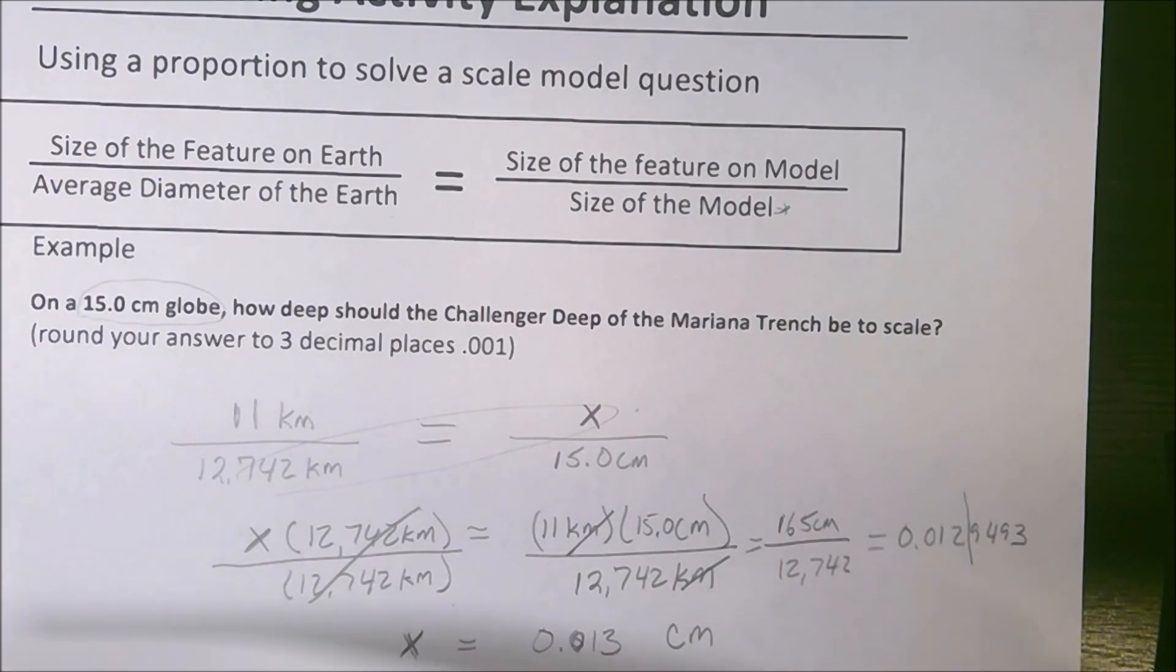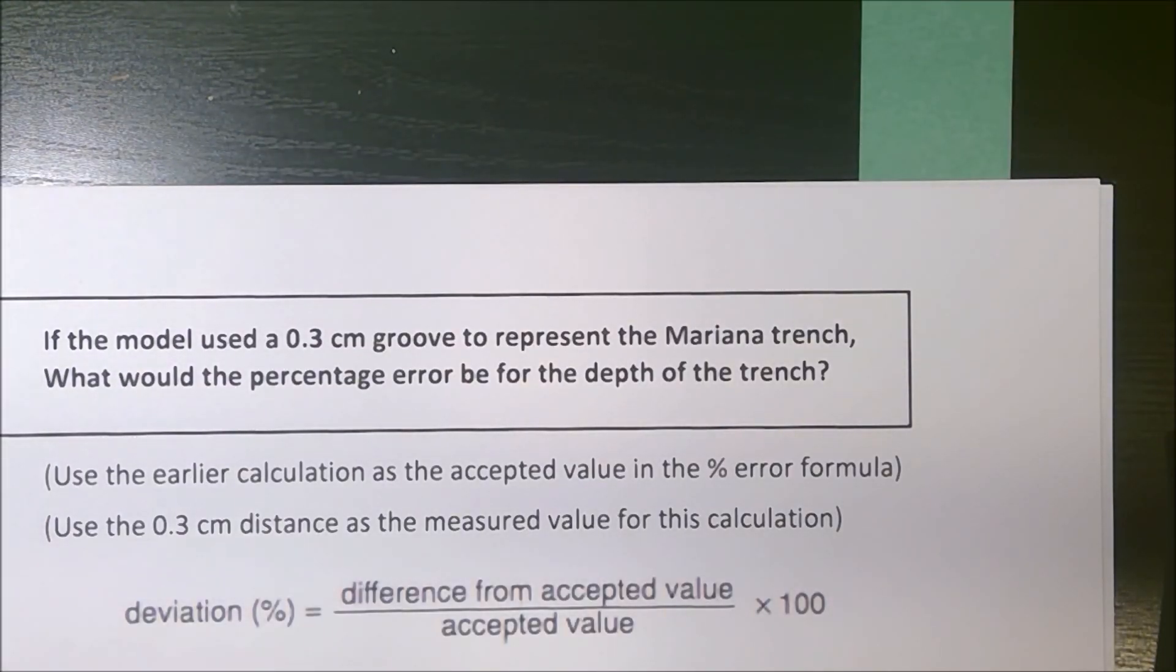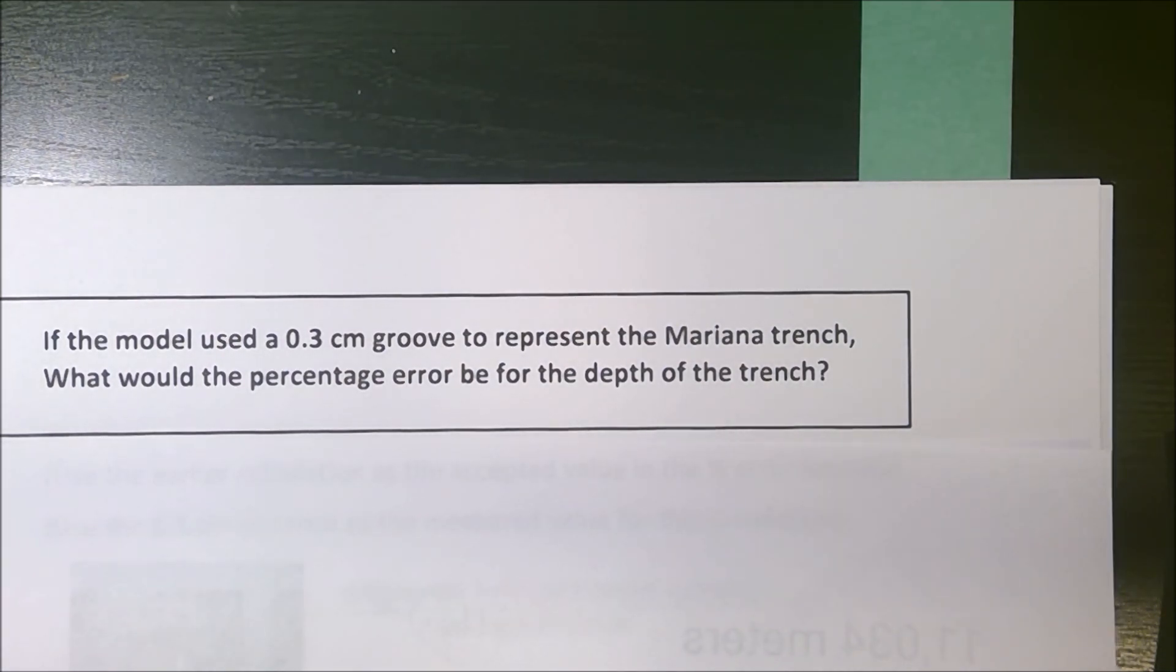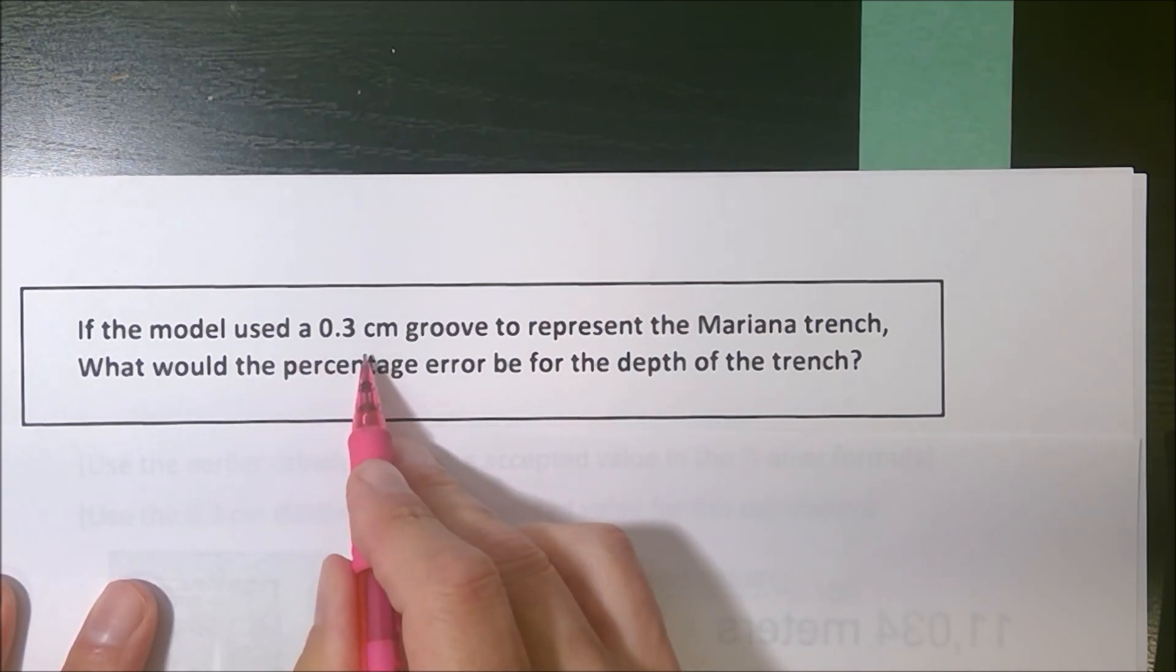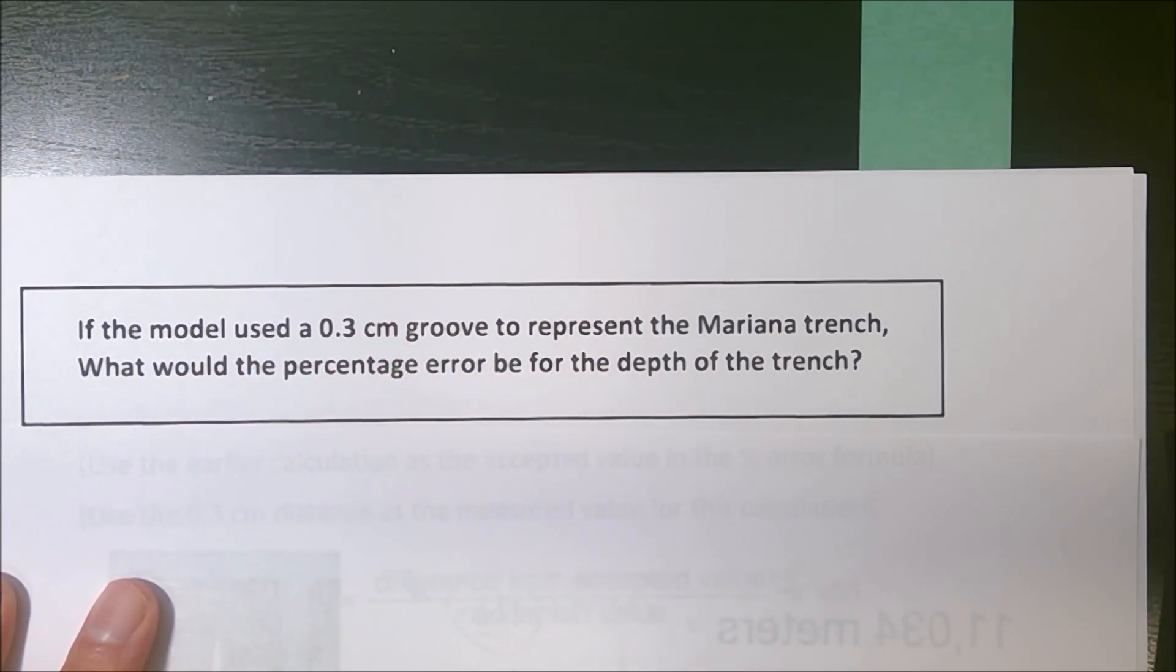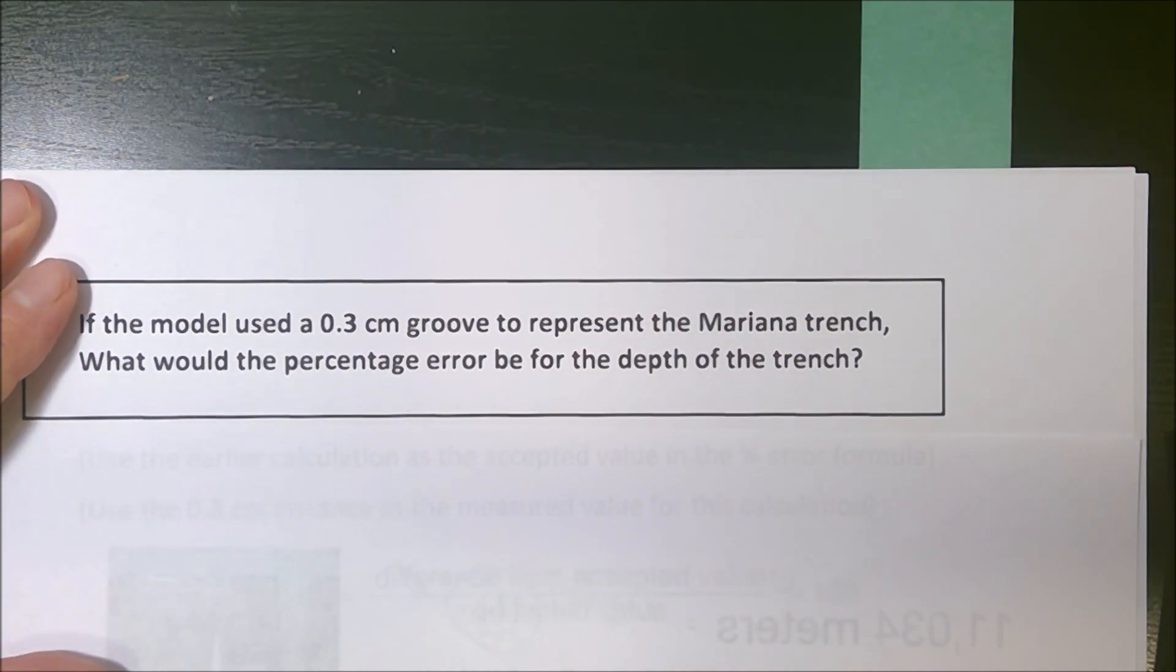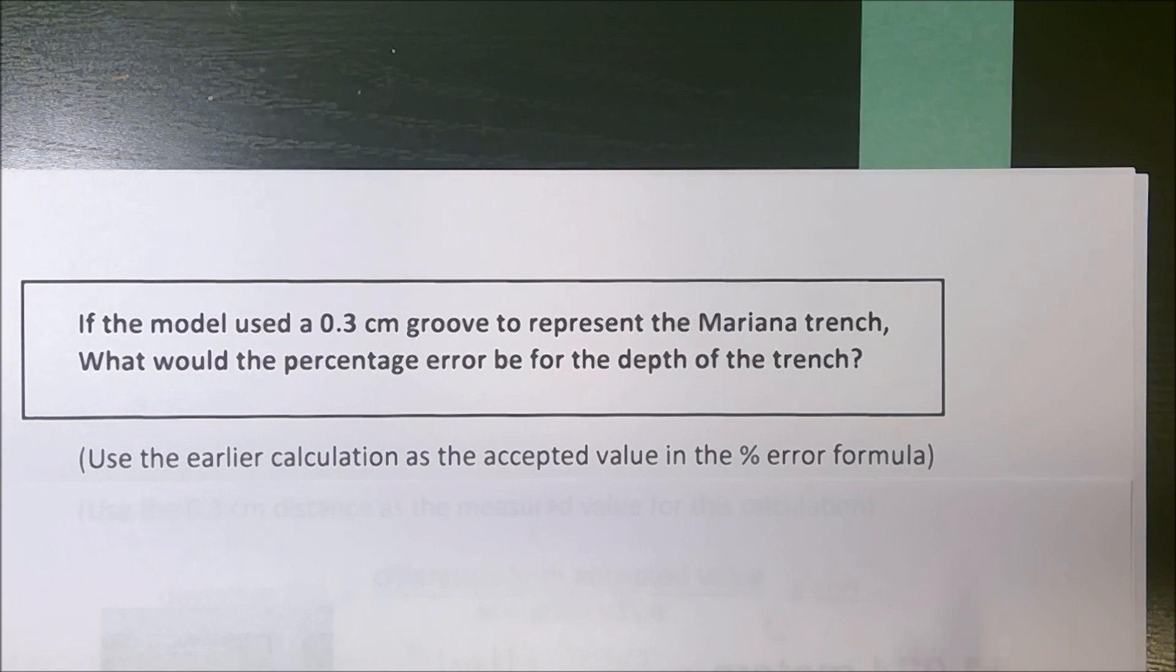Now, another thing that you can ask you to do with this is to look for a percentage of error. So we're going to imagine that they tried to manufacture that globe. They vertically exaggerate or overestimate the size. So what if they used a 0.3 centimeter groove to show the trench so you could actually see it? What would the percentage error be for the depth of that on the model?